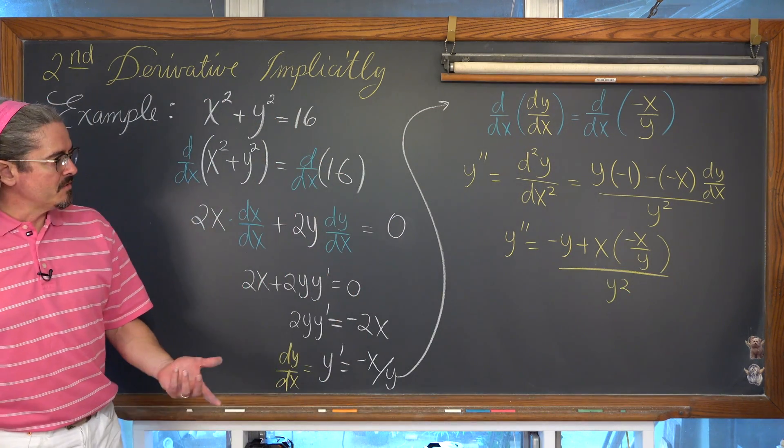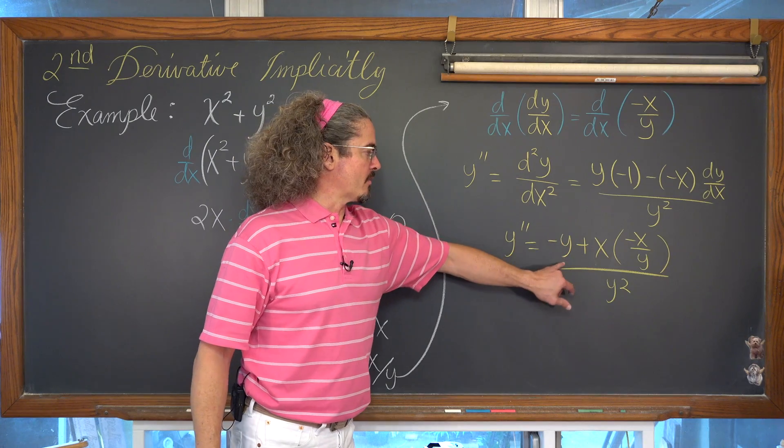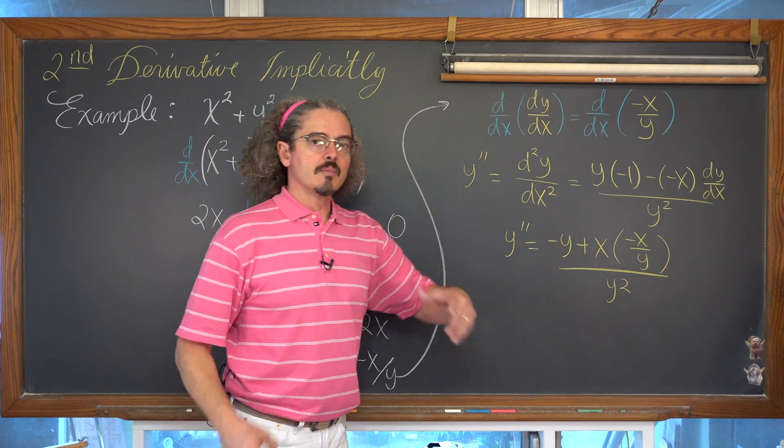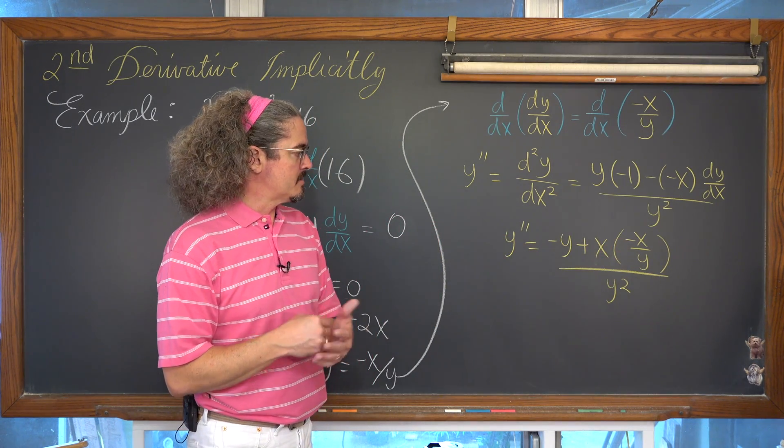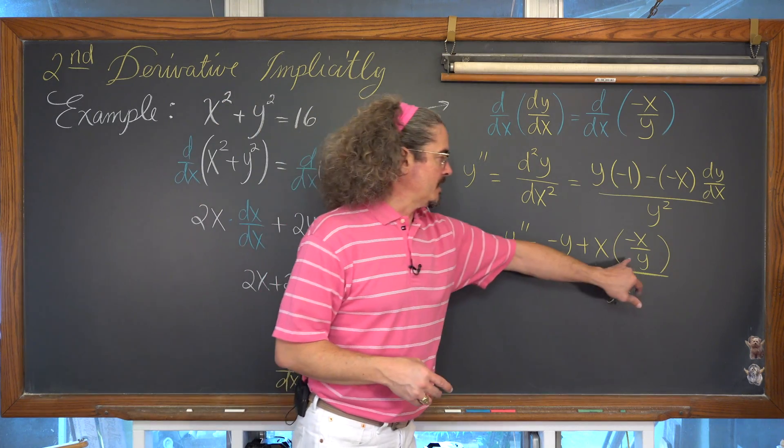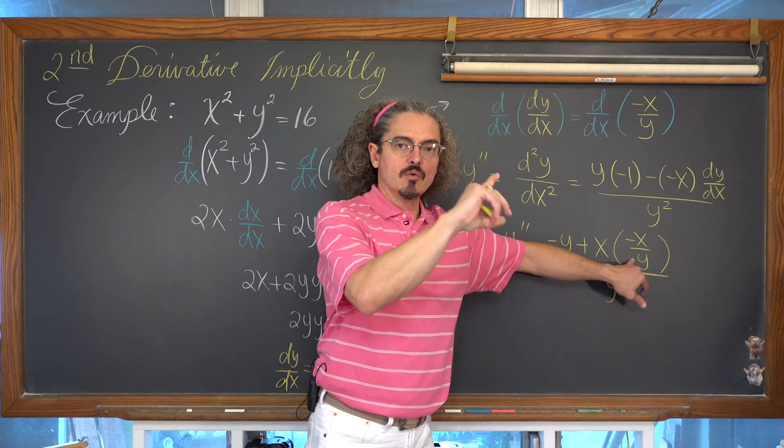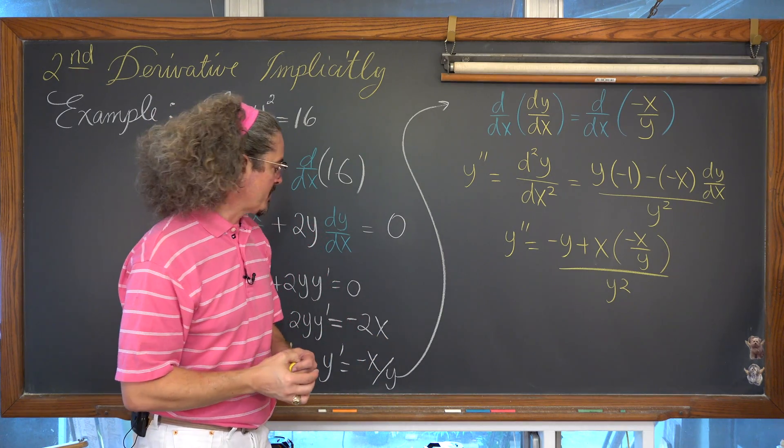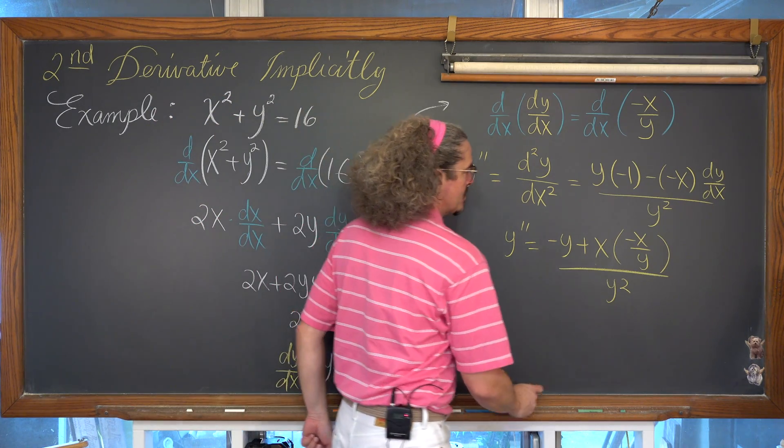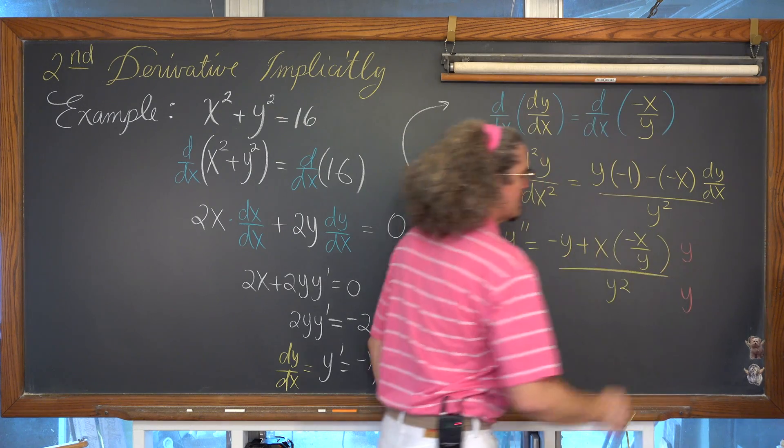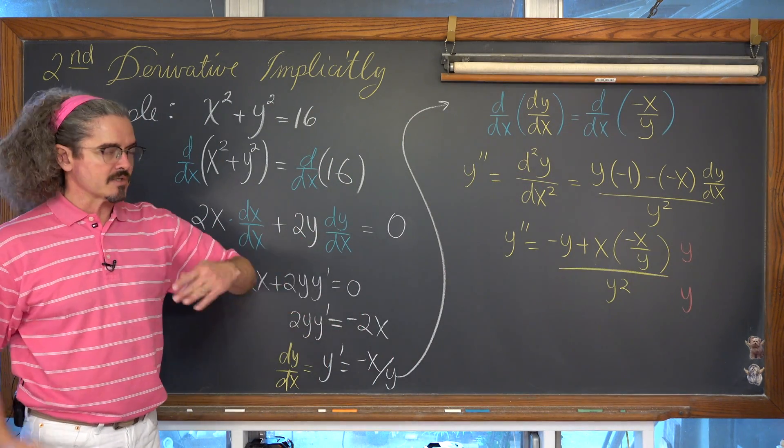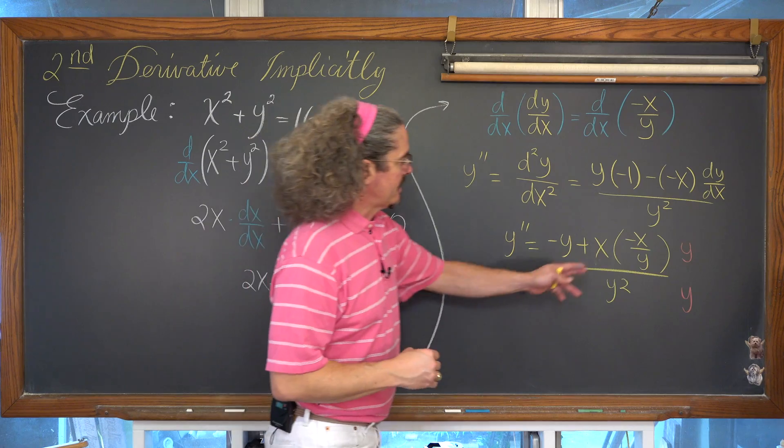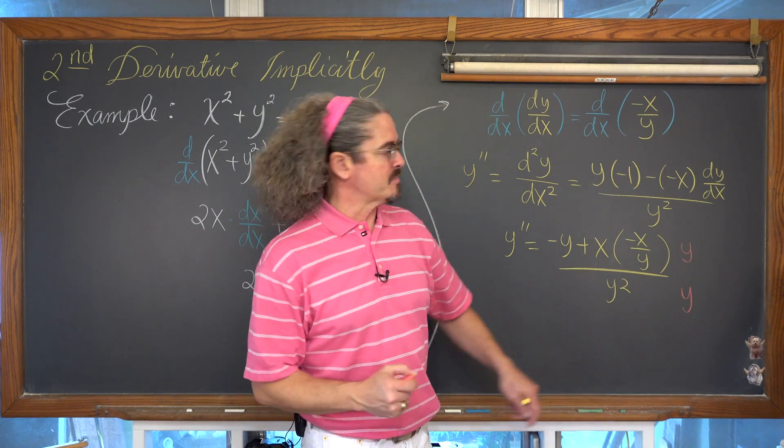Now there's a few ways you can do this. We can write negative y over one and find a common denominator, or we can do something to eliminate the division of y in the numerator, which the inverse math operation to division is multiplication. So what I'm going to do is multiply the numerator by y and the denominator by y, and just do a little bit less work. Eliminate that division of y, because I'm running out of board space.